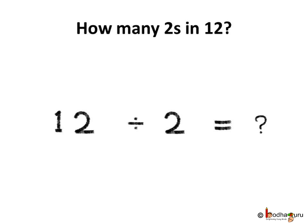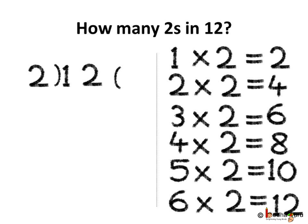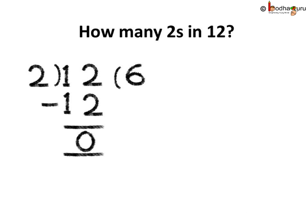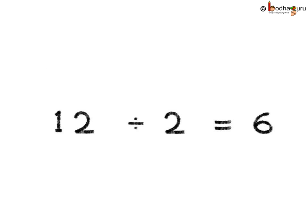So, if we divide 12 by 2, we can find the number of hens. Let us divide 12 by 2. If you know the table of 2: 1 2's are 2, 2 2's are 4, 3 2's are 6, 4 2's are 8, 5 2's are 10 and 6 2's are 12. So, we get 12 divided by 2 is equal to 6.